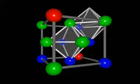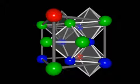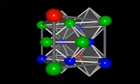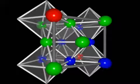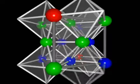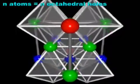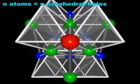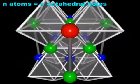Other octahedral holes lie partially inside this cell. The center octahedral hole shares each of its 12 edges with 12 other octahedral holes. Eight of these are shown here, and each of these lies one-fourth inside the cell. Overall, an array of N atoms in a close-packed structure gives rise to N octahedral holes.